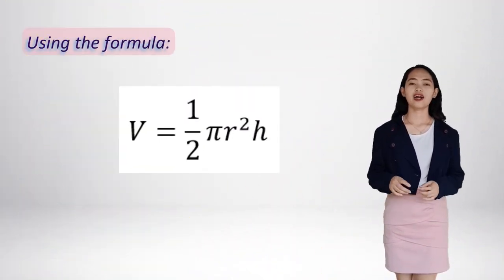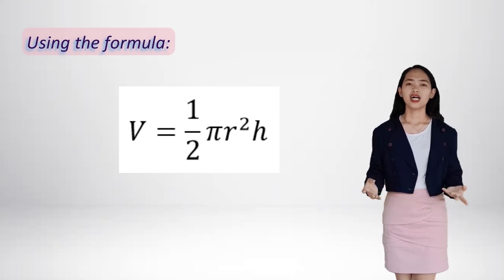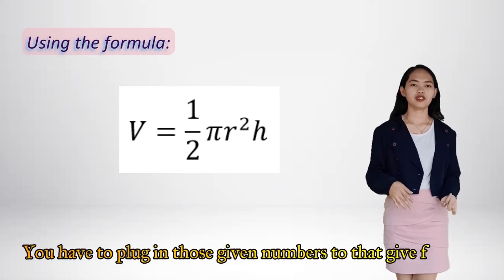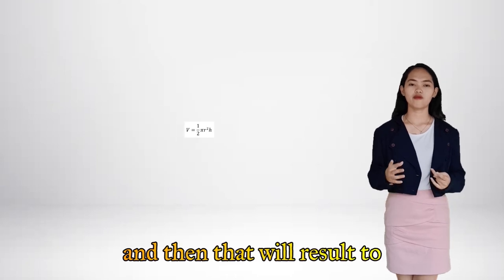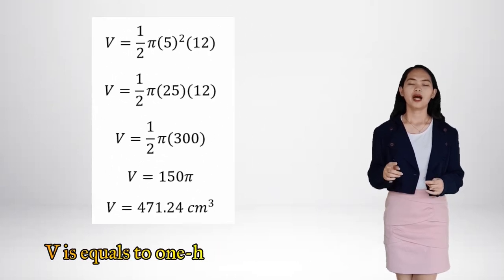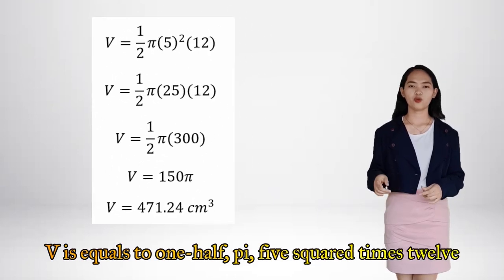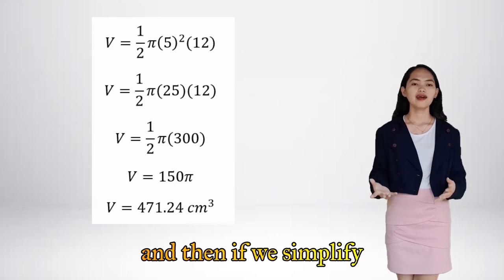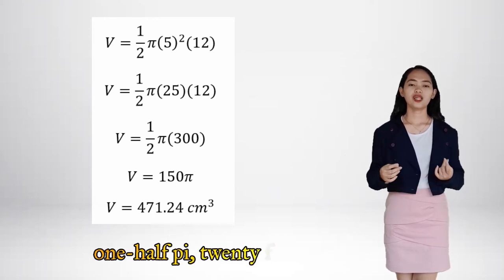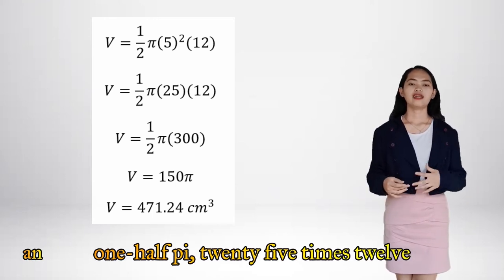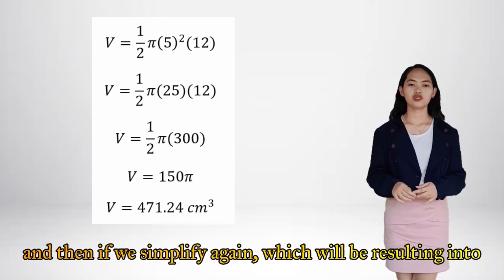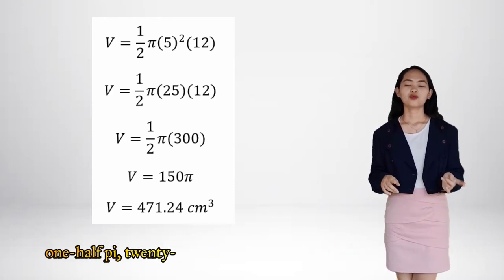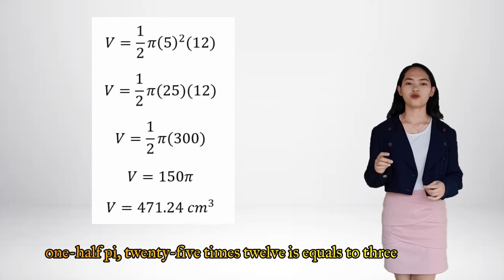Using the formula, V is equal to one-half pi r squared times height, you have to plug in those given numbers to the given formula and then that will result to V is equal to one-half pi times 5 squared times 12. And then if we simplify, we get V is equal to one-half pi times 25 times 12 equals 300.